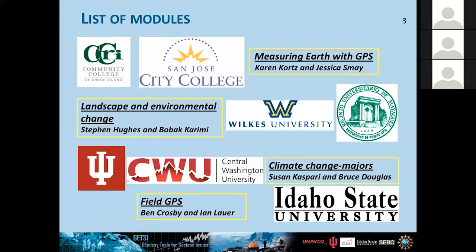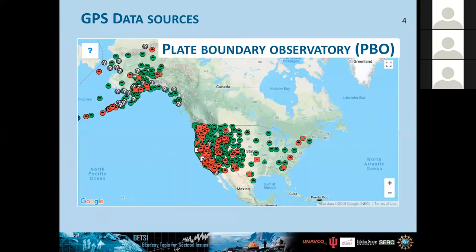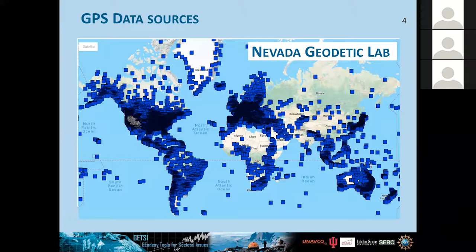Much of the data I've been using is GPS collected from the PBO site — the Plate Boundary Observatory — and the NSDL. Especially if you are in some places such as Greenland, the PBO has limited data, so I use the NSDL. Those are the two GPS data sites.